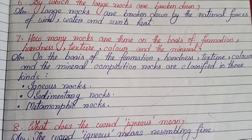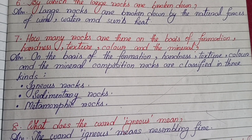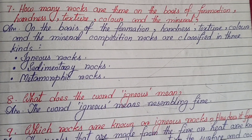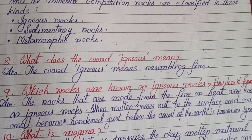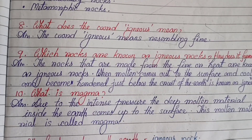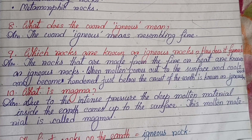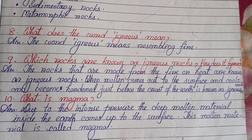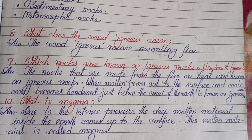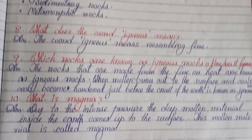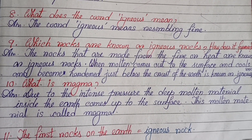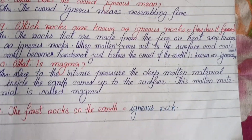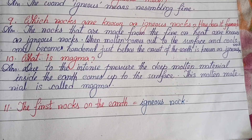How many kinds of rocks are there? On the basis of formation, hardness, texture, color and mineral composition, rocks are classified into three kinds: igneous rocks, sedimentary rocks, and metamorphic rocks. What does the word igneous mean? The word igneous means resembling fire. Which rocks are known as igneous rocks? The rocks that are made from fire or heat are known as igneous rocks. When molten material comes out to the surface and cools and becomes hardened just below the crust of the Earth, it is known as igneous rock. What is magma? The deep molten material inside the Earth that comes up to the surface due to intense pressure is called magma. The first rock on the Earth was igneous rock.